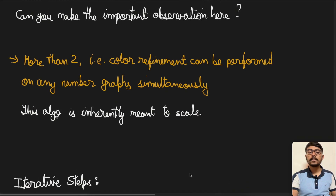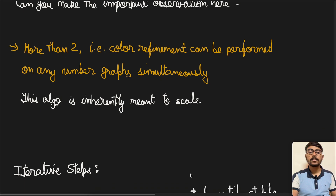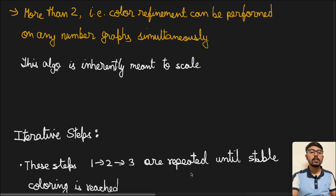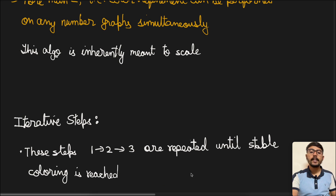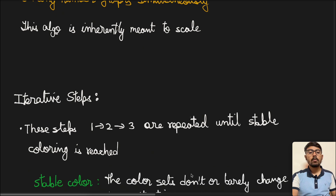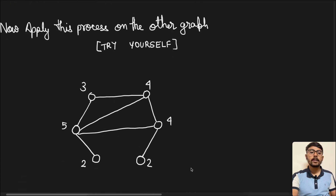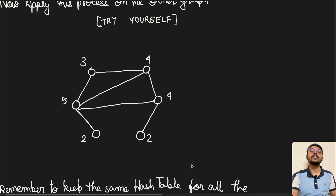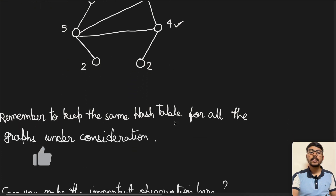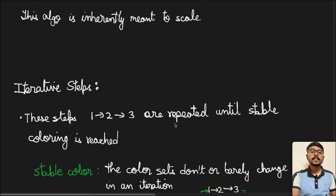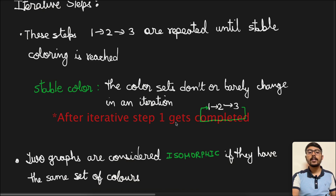We now move to the iterative steps, which are the repetition of steps one, two, and three until we reach a stable coloring scenario. Stable coloring means the color sets don't change — or barely change — in any iteration, so either only one node changed or no node changed. Two graphs are considered isomorphic if they have the same set of colors after stable coloring is reached.